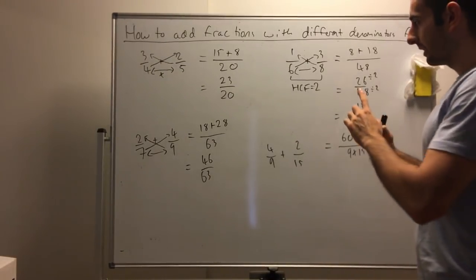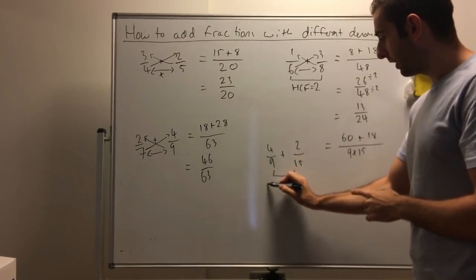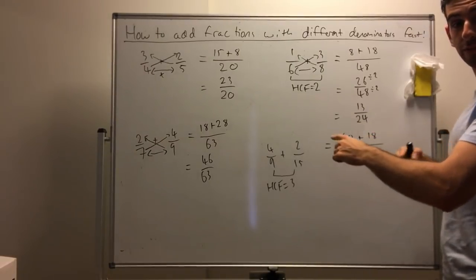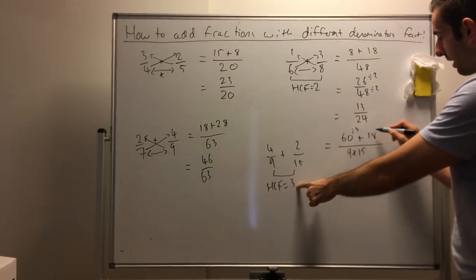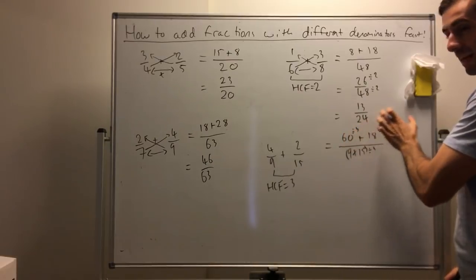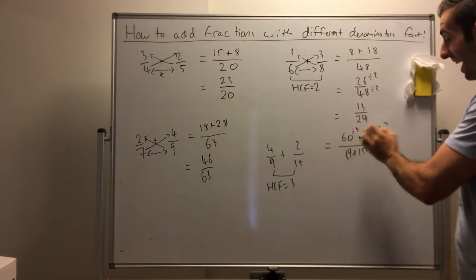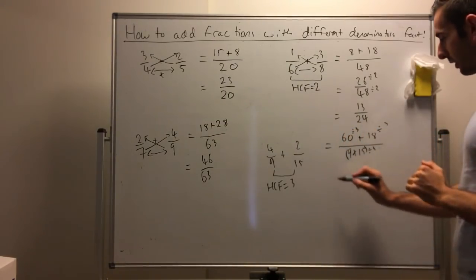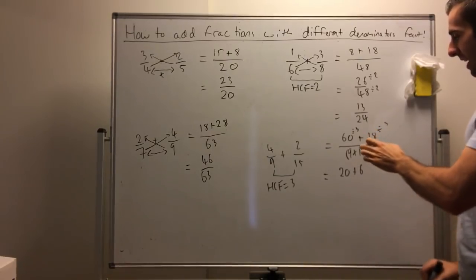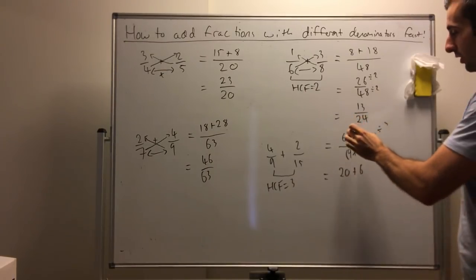The trick here is instead of adding them together, working that out, and then dividing out, the highest common factor of 9 and 15 is 3. What we're going to do instead is before we add and times, we're going to divide. We divide each number by 3. Why? It's easier to divide smaller numbers by 3 instead of having to add 60 and 18. 60 divided by 3, that's 20. 18 divided by 3, that's 6. If we added 60 and 18, that's 78. Can you do 78 divided by 3 really quickly? Probably not.